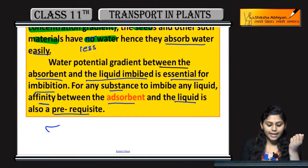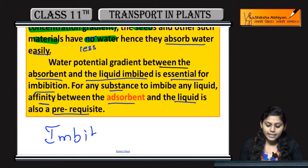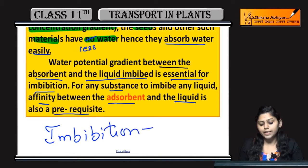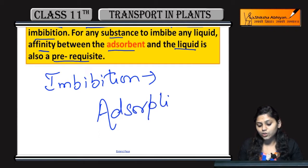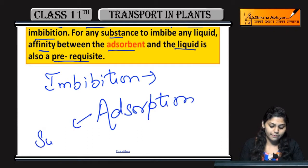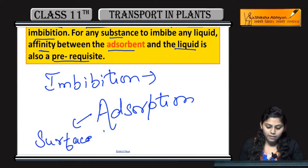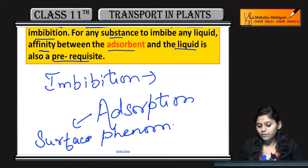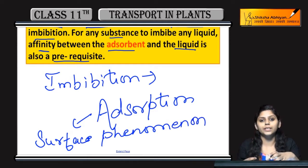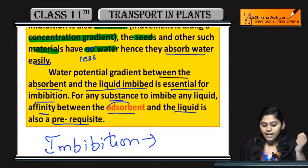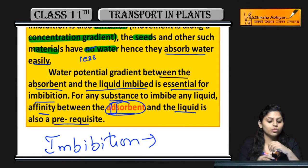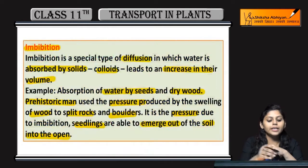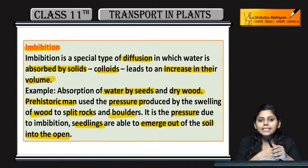Ab ye jo phenomena hai imbibation ka, ismein mainly kya hota hai — hum kehte hai absorption hoti hai, but sahih term hai adsorption. Adsorption kya hai? Ek surface phenomena hai — it is a surface phenomena, sirf surface mein adsorption hoti hai. Isi liye term kya use ki hai yahan: adsorbent, not absorbent — it's 'ad'. So this was all about imbibation — ek surface phenomena hai jiski wajah se jo bhi seedlings hai ya dry wood hai, woh swell kar paati hai.